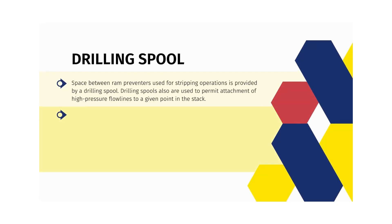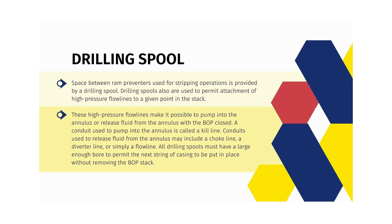Space between ram preventers used for stripping operations is provided by a drilling spool. Drilling spools are also used to permit attachment of high-pressure flow lines to a given point in the stack. These high-pressure flow lines make it possible to pump into the annulus or release fluid from the annulus with the BOP closed. A conduit used to pump into the annulus is called a kill line; conduits used to release fluid from the annulus may include a choke line, a diverter line, or simply a flow line. All drilling spools must have a large enough bore to permit the next string of casing to be put in place without removing the BOP stack.